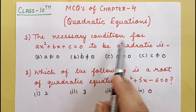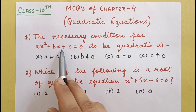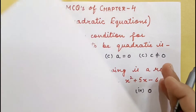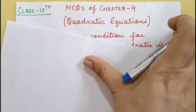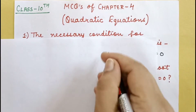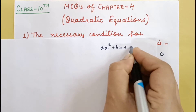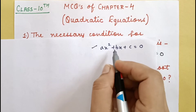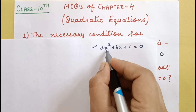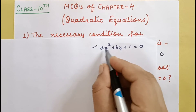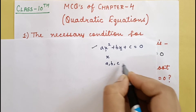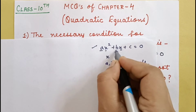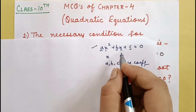The necessary condition for ax² + bx + c = 0 to be quadratic is — let's understand what a quadratic equation is. In ax² + bx + c = 0, this is the general quadratic equation. The variable is x, and a, b, c are its coefficients — constants or real values that can assume any value.